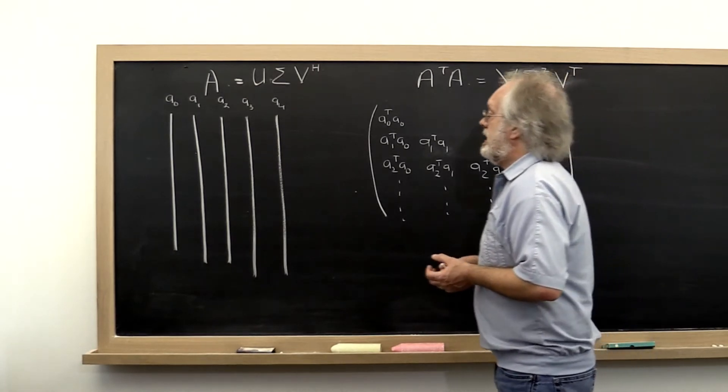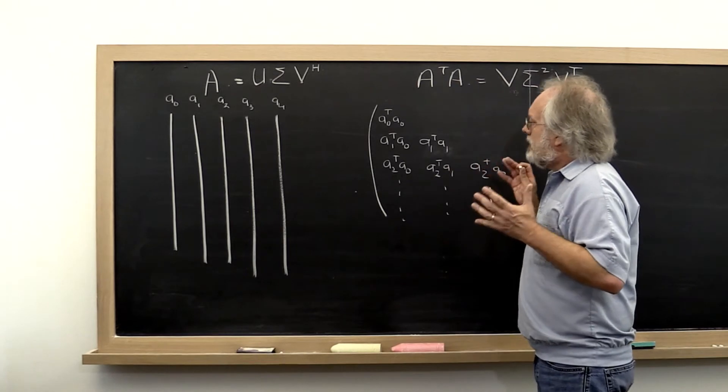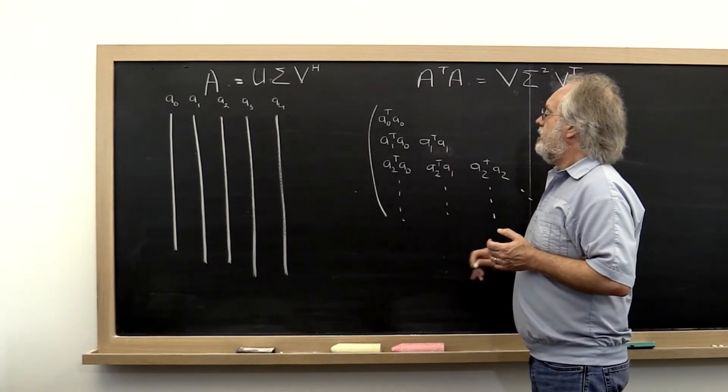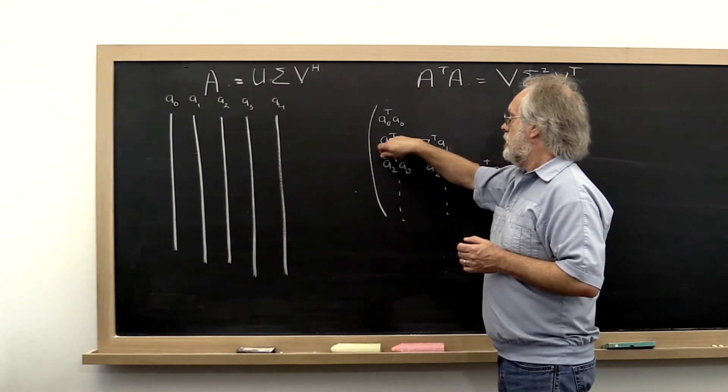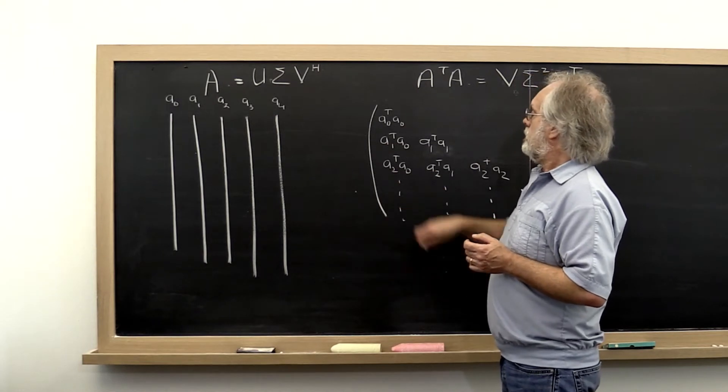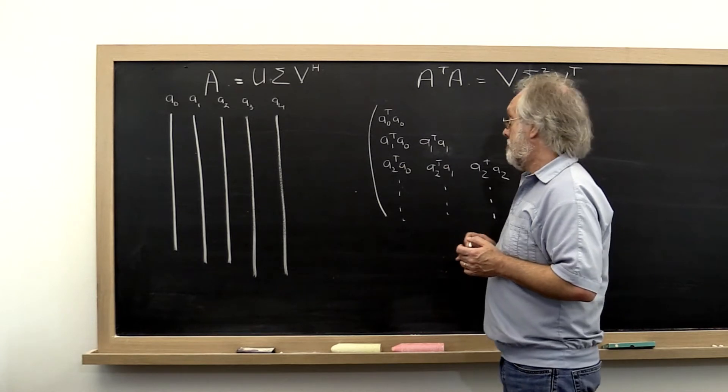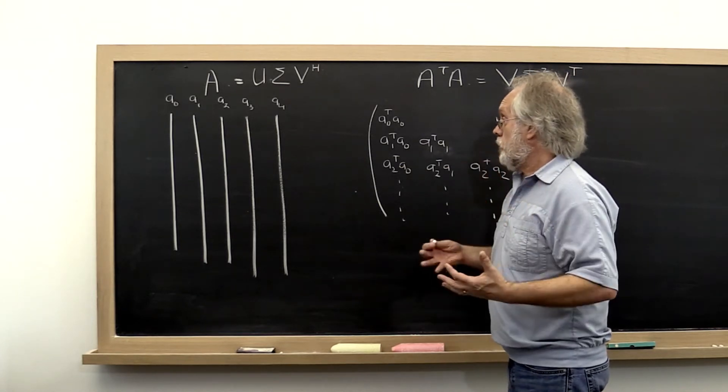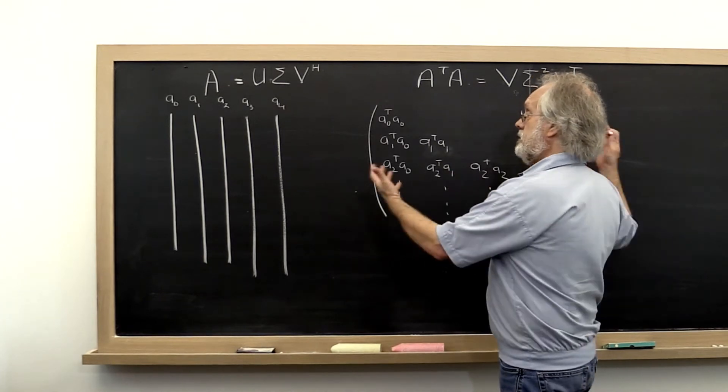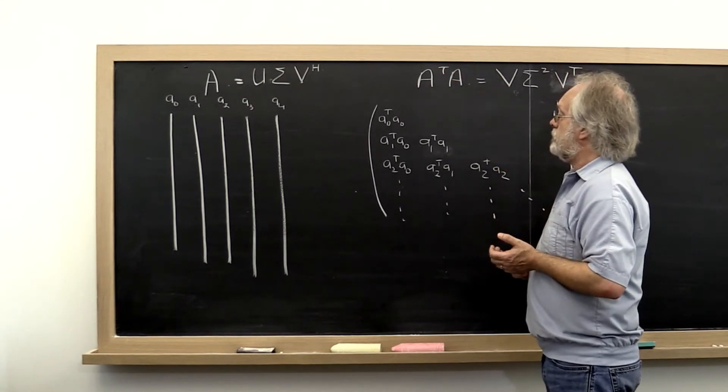So the way it works is that you look at this and say, if we formed this matrix, then Jacobi's method would start computing rotations that zero out these various entries. Now what we can do instead of actually forming all of A transpose A and then applying these Jacobi rotations to it,